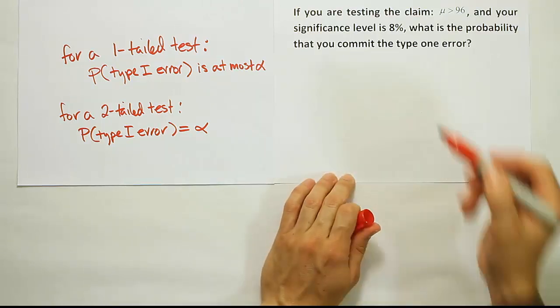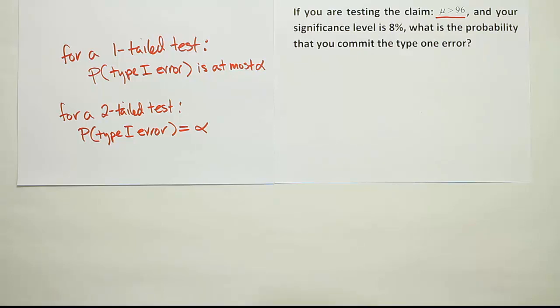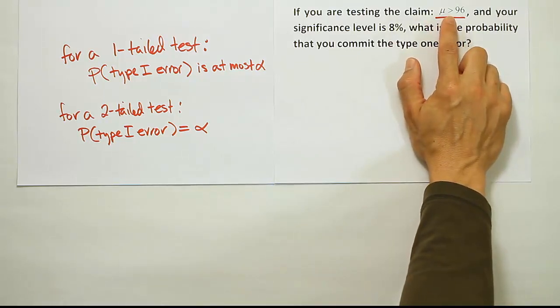We're just going to look at this claim and ask ourselves, what does that tell us about HA? Well, in this case, that claim is the same as HA because it has one of the symbols that HA has.